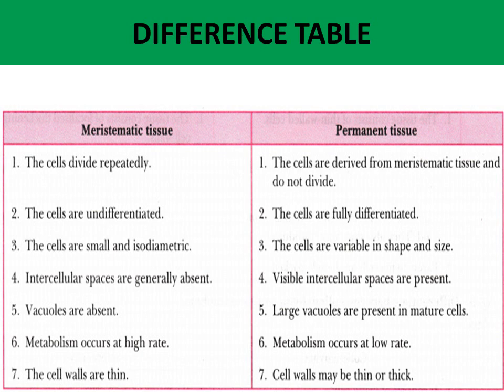Difference six: in meristematic tissue metabolism occurs at a high rate; in permanent tissue metabolism occurs at a low rate. Difference seven: in meristematic tissue the cell walls are thin; in permanent tissue cell walls may be thin or thick.